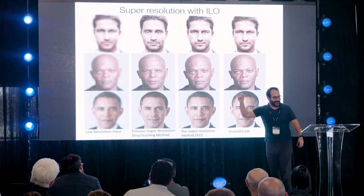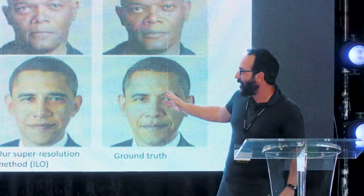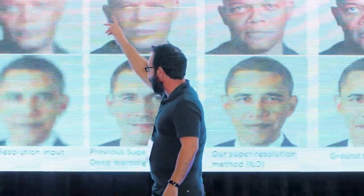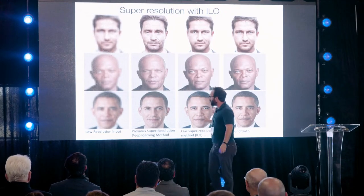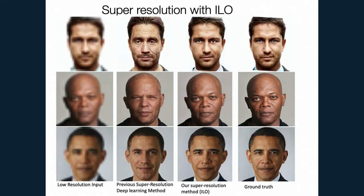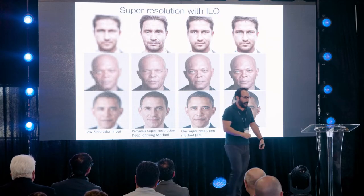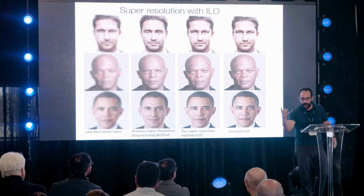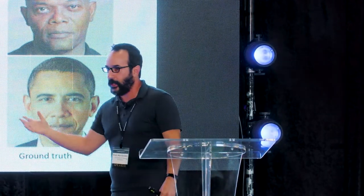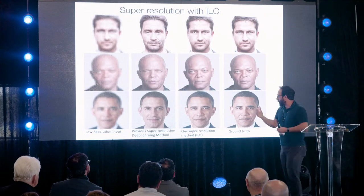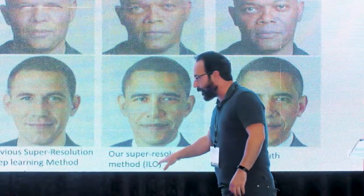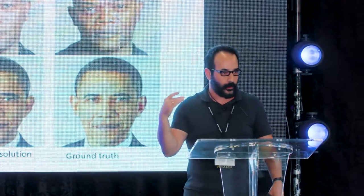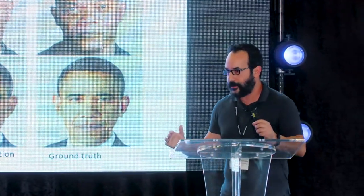This brings us to the famous 'White Obama' story. Someone uploaded a tool on Twitter: upload a 16x16 pixel image and get a 1,000x1,000 super resolution image. The first post showed Obama's face — and out came a white person. People started uploading all kinds of images, and the tool was basically making everyone white. Our algorithm — optimizing inside the network — is able to remove those biases.